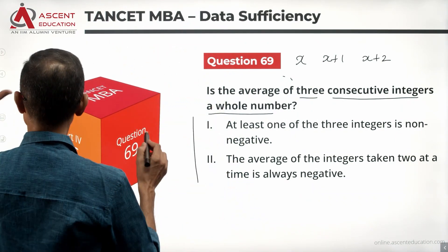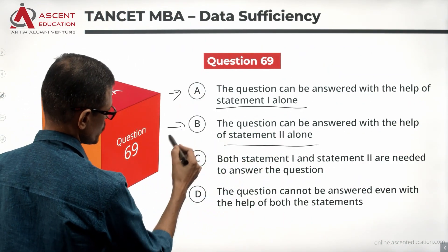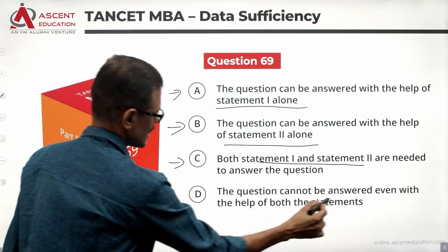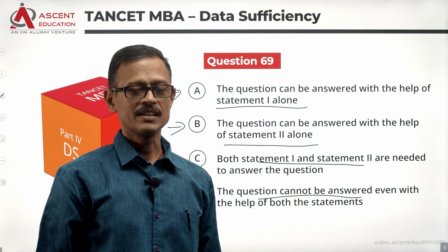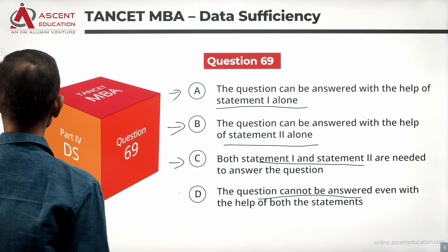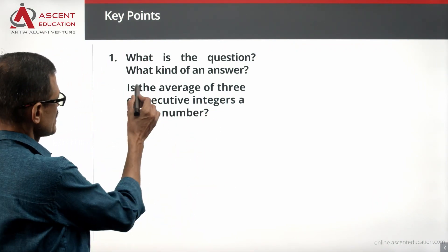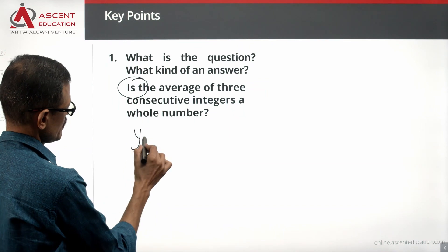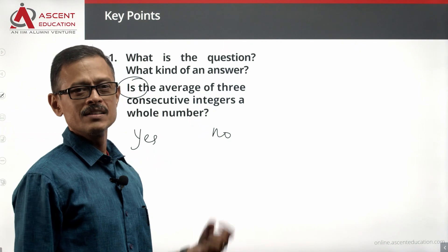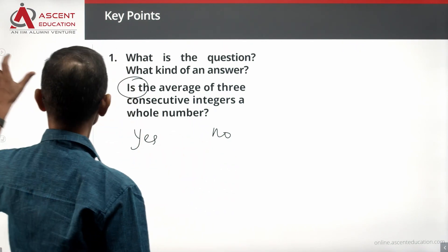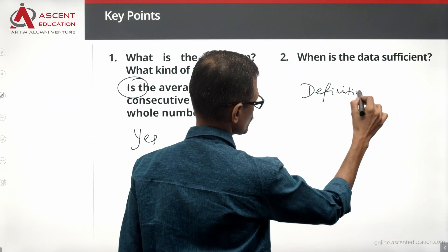Let's take a look at the statements and the answer options. Statement 1 alone sufficient is answer A. Statement 2 alone sufficient is answer B. Together they are sufficient is answer C. If the information is not sufficient and we need additional data, that is answer D. The data is sufficient when we have a definitive, conclusive yes or a conclusive no.